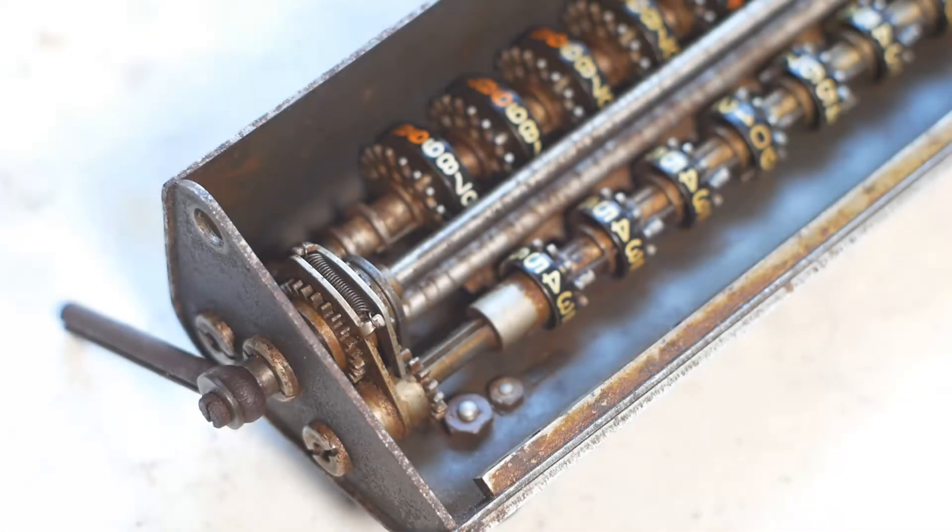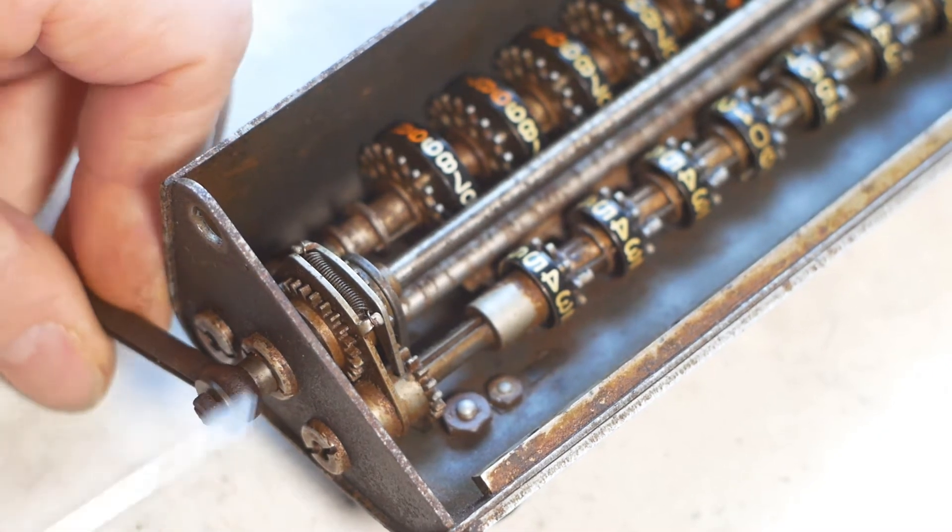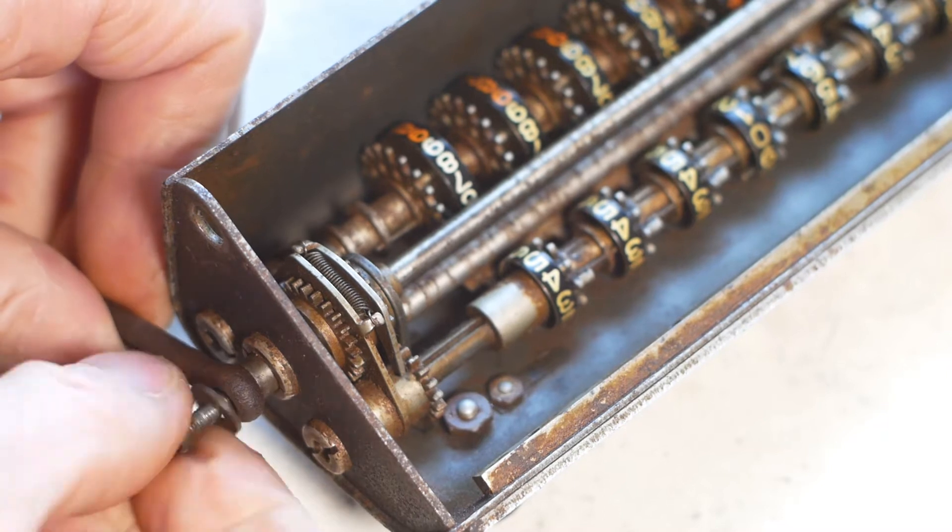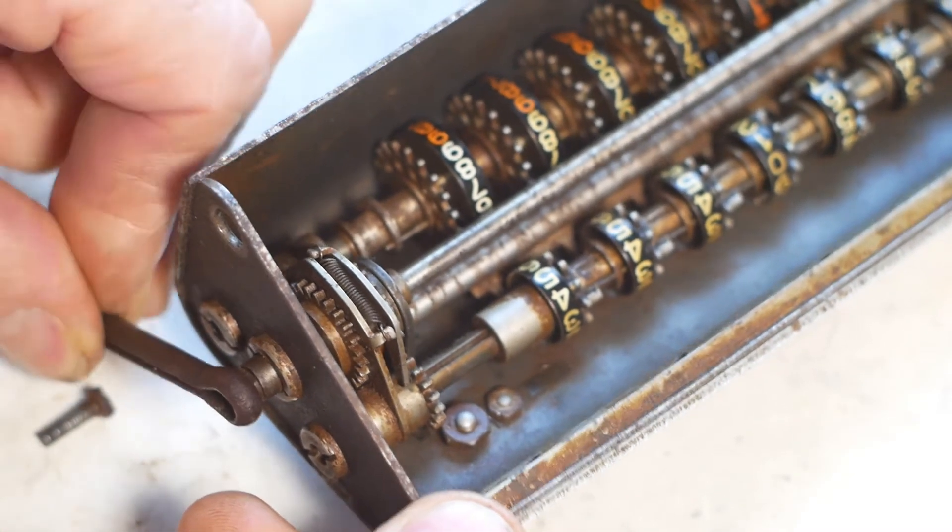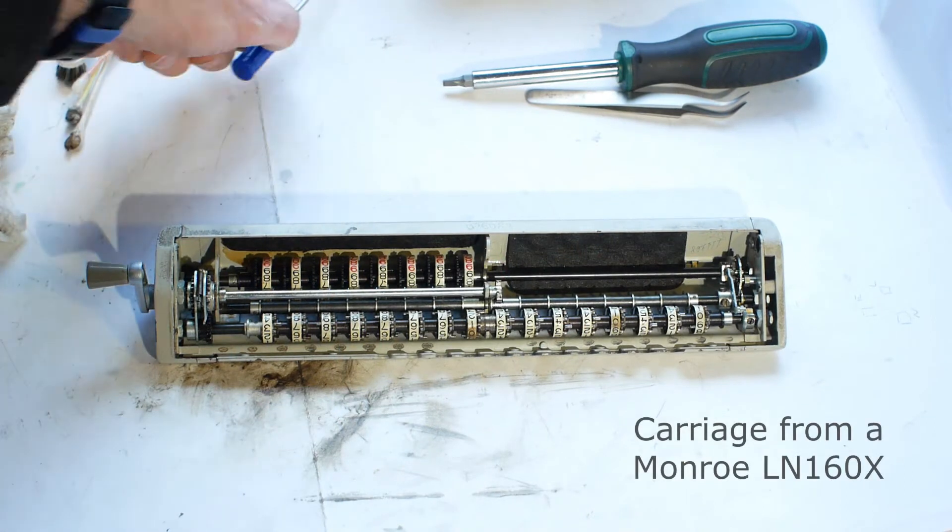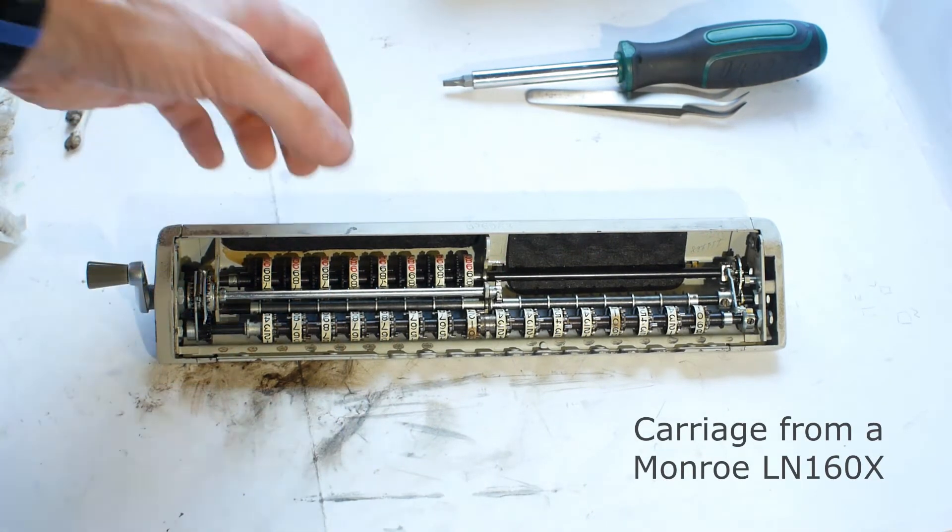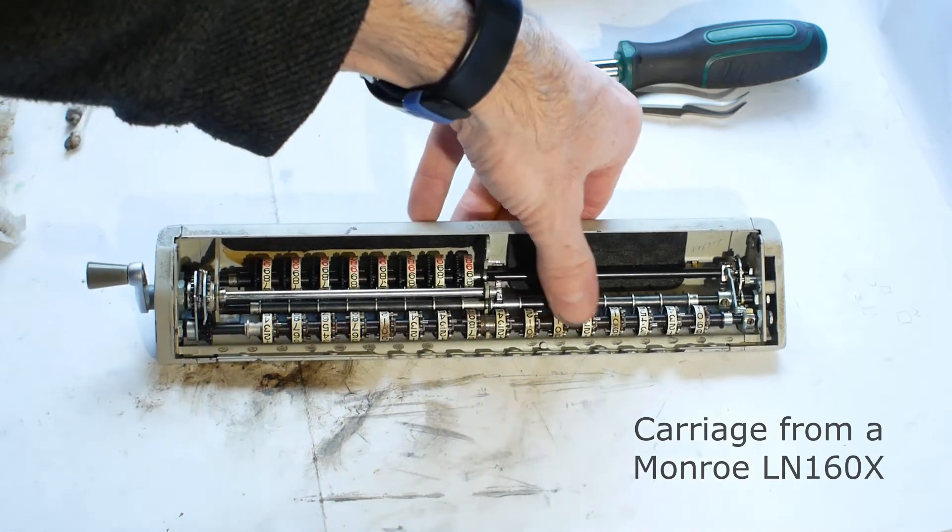So now it's time to look at the carriage containing the counter and output registers. The first job is to remove the clearing handle, which simply unscrews. This is actually a split pin that someone has fitted in the past, so I'll make a better replacement before I finish the project. The carriage on the Lagomassino is reasonably similar to the carriage on a Munro hand-cranked calculator, so some of these steps could be used on both machines.